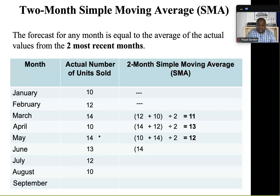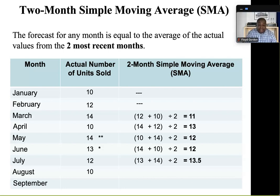For June, it's 14 plus 10 divided by 2, giving us a forecast of 12. For July, the previous two months — June and May — averaged gives a forecast of 13.5 units. Don't worry about the 13.5; we know we can't sell 13.5 units, but this figure is the actual forecast for July, somewhere between 13 and 14 units, and we'll round it off when the time comes. For now, we want to see how close this forecast was to actual sales for the month, so we'll leave it as 13.5.